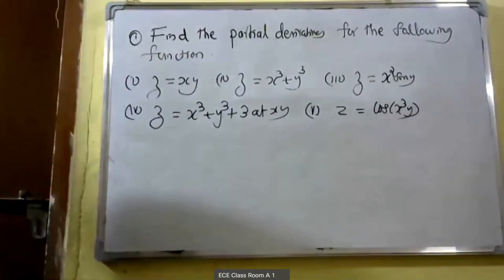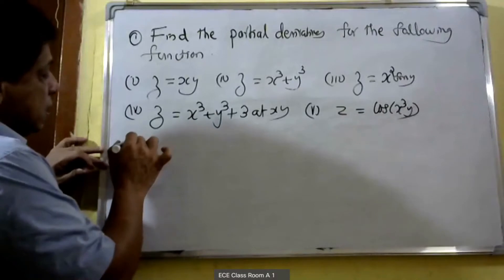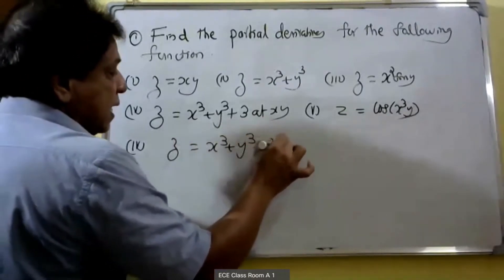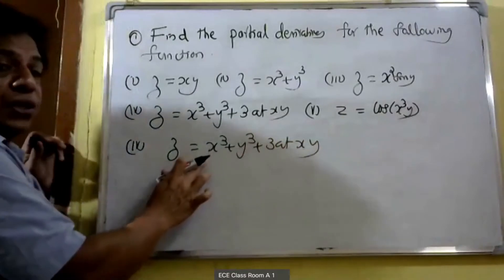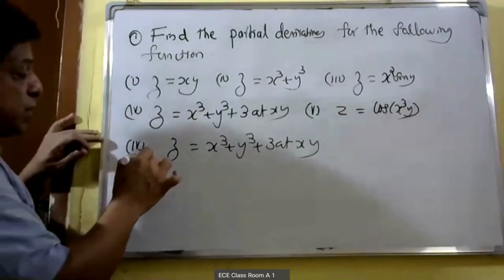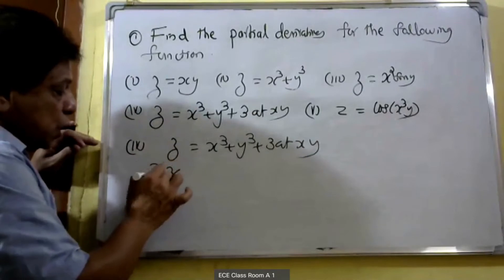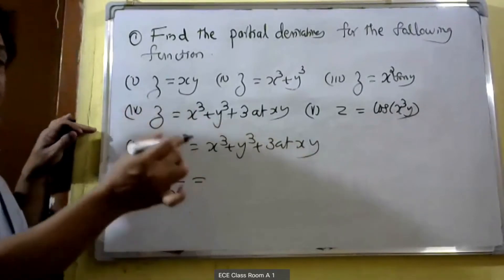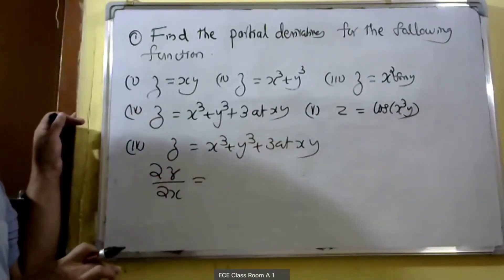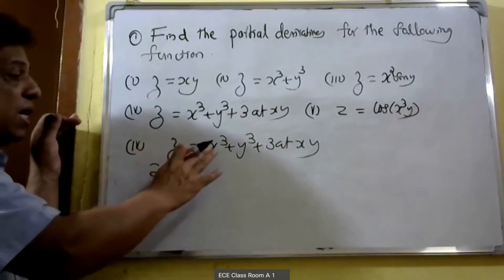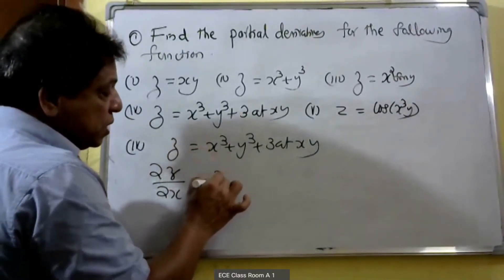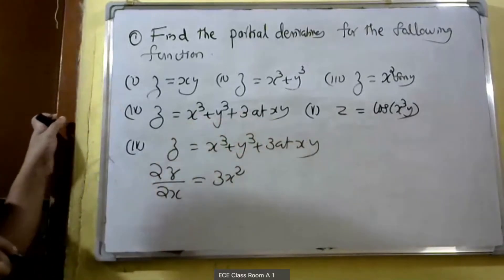The fourth problem: z is equal to x³ plus y³ plus 3axy. In this function there are three variables x, y, and t. First we partially differentiate with respect to x, then we get ∂z/∂x. When partially differentiating with respect to x, y and t are constants — all other variables are constants, only x is the variable. Therefore ∂z/∂x: derivative of x³ is equal to 3x².